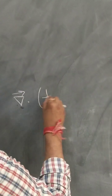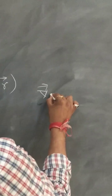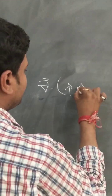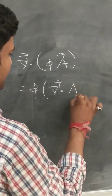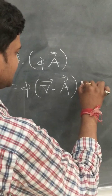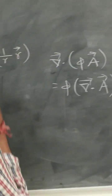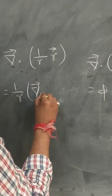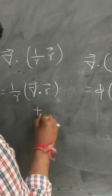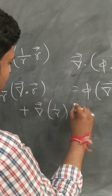I am evaluating the divergence of (1/r) r⃗. We know that divergence of φ**a** equals φ times divergence of **a** plus gradient of φ dot **a**. So here we can write (1/r) times divergence of r⃗, plus gradient of (1/r) dot r⃗.